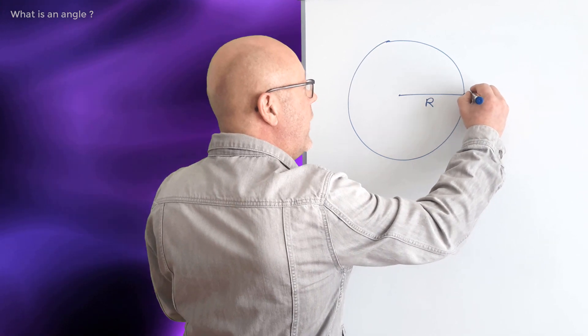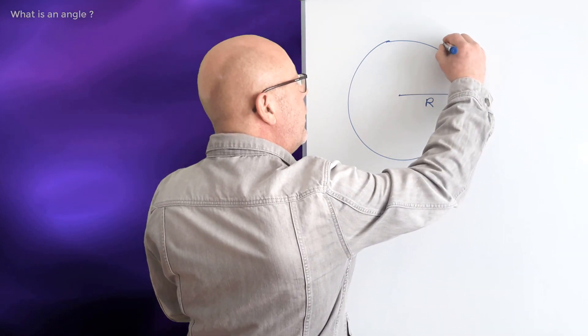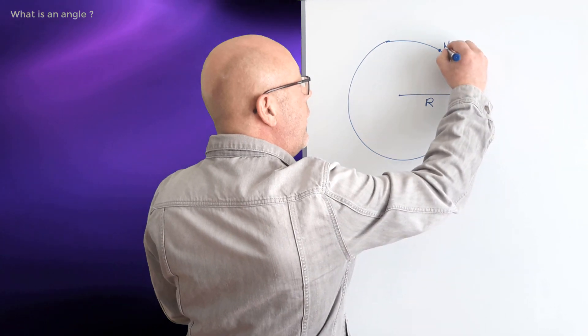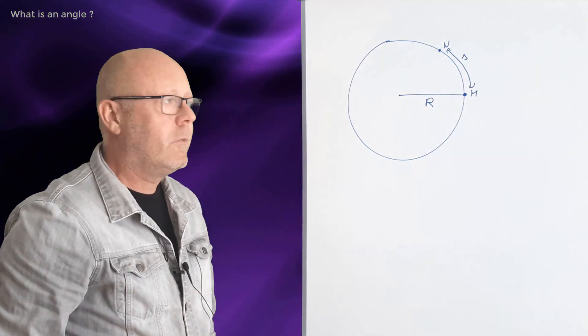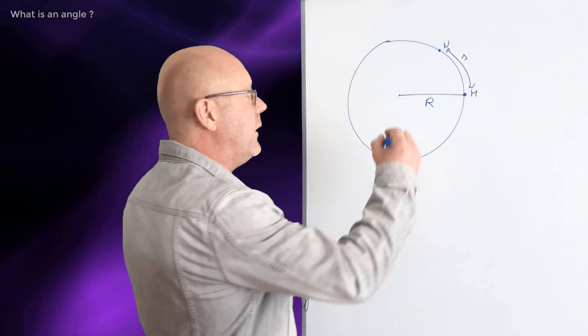And that it starts at point M, and covers the arc Mn. So this arc Mn could be called S. At the same time, it would cover an angle theta.